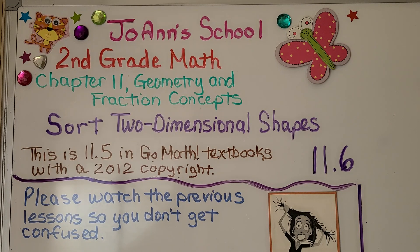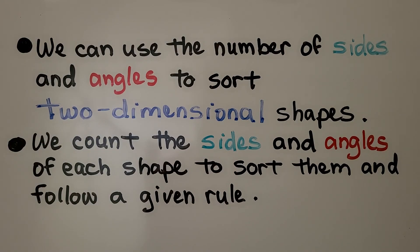Lesson 11.6, Sort Two-Dimensional Shapes. This is 11.5 in the 2012 copyright. We can use the number of sides and angles to sort two-dimensional shapes. We count the sides and angles of each shape to sort them and follow a given rule.